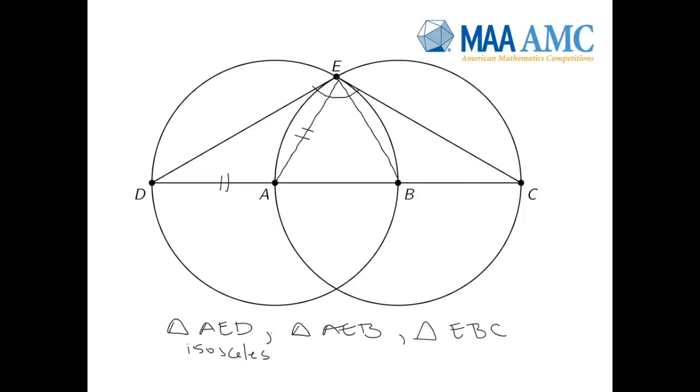Now let's look at the triangle A, E, B. Well, the distance from A to B is the distance from the center to the edge of the circle, so it's also the same as the radius. And this is the radius because they're congruent circles, so they're exactly the same. And so this triangle in the middle is an equilateral triangle.